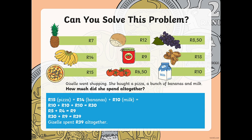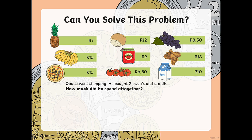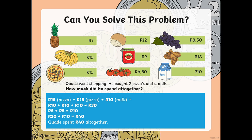Please make sure to pause the video before the answer is revealed so that you can try it on your own. Can you solve this problem? Quade went shopping. He bought 2 pizzas and a milk. How much did he spend altogether? He bought 2 pizzas, so our sum should be 15 rand plus 15 rand plus 10 rand for the milk. We bring 10 rand down from the first pizza, 10 rand from the second pizza, and 10 rand from the milk: 10 plus 10 plus 10 equals 30 rand. Then we bring down 5 rand from each pizza: 5 plus 5 is 10 rand. 30 rand plus 10 rand is 40 rand. Quade spent 40 rand altogether.